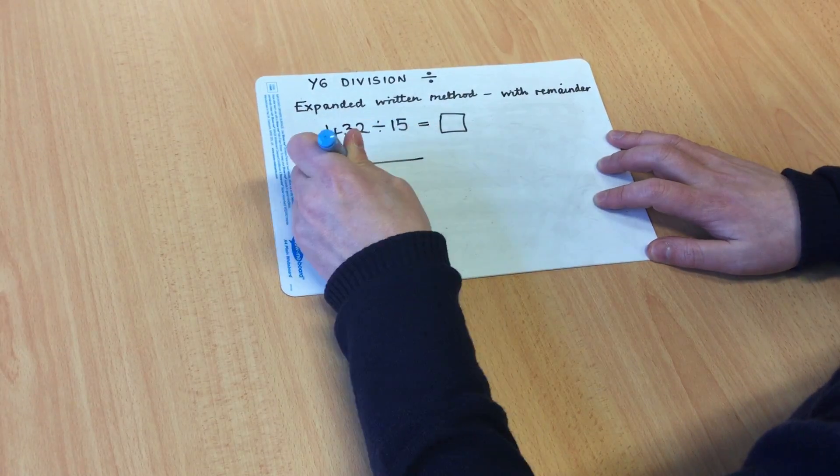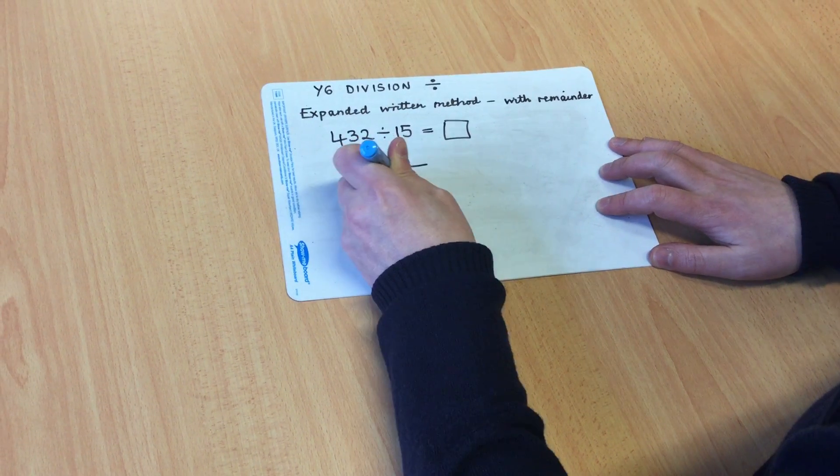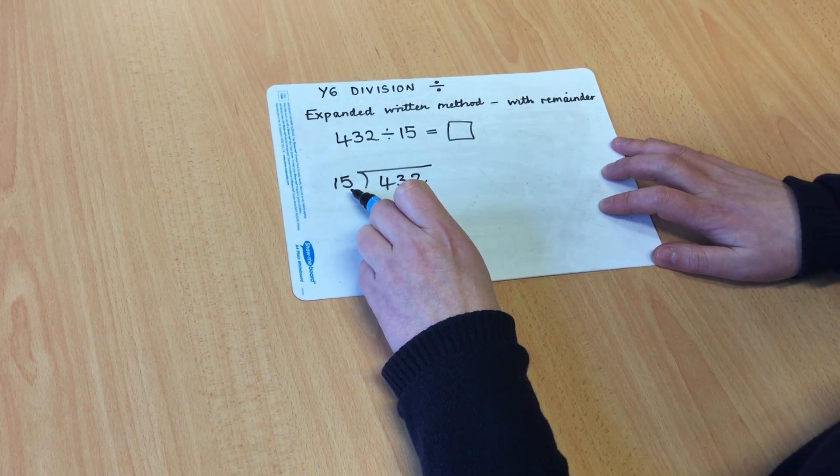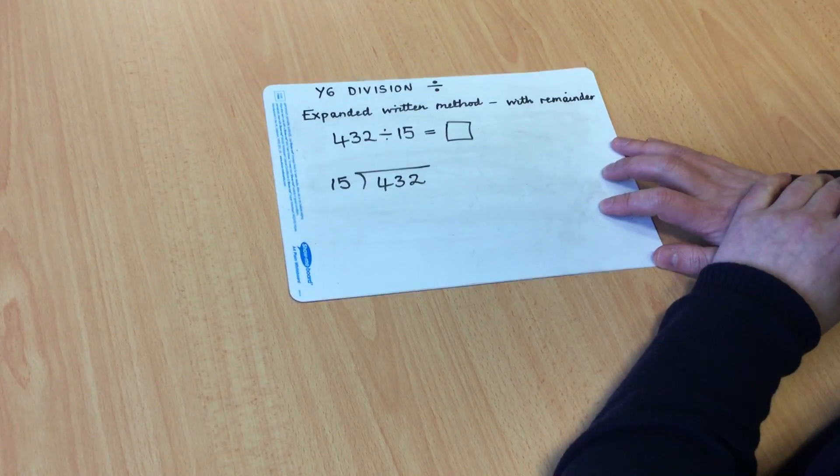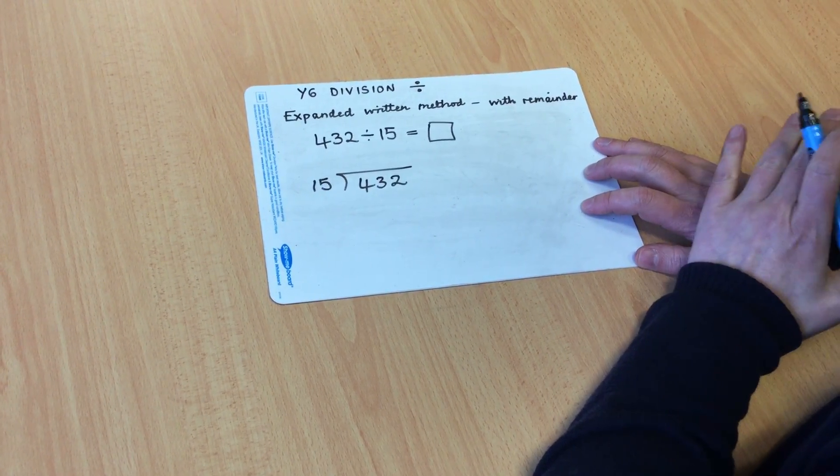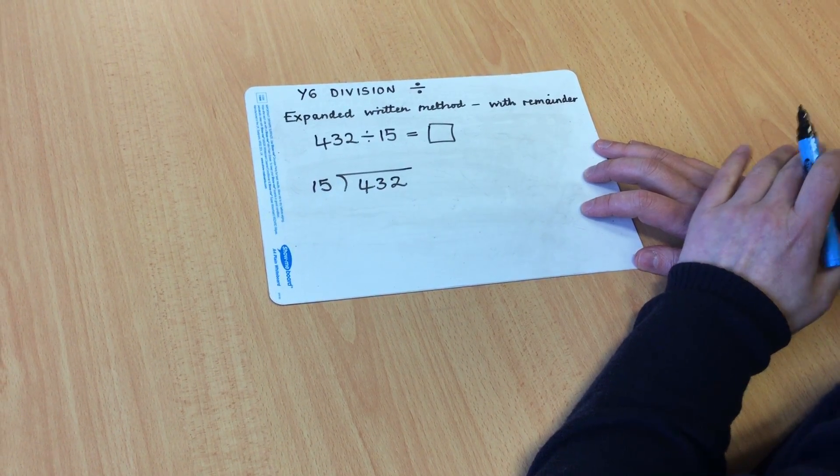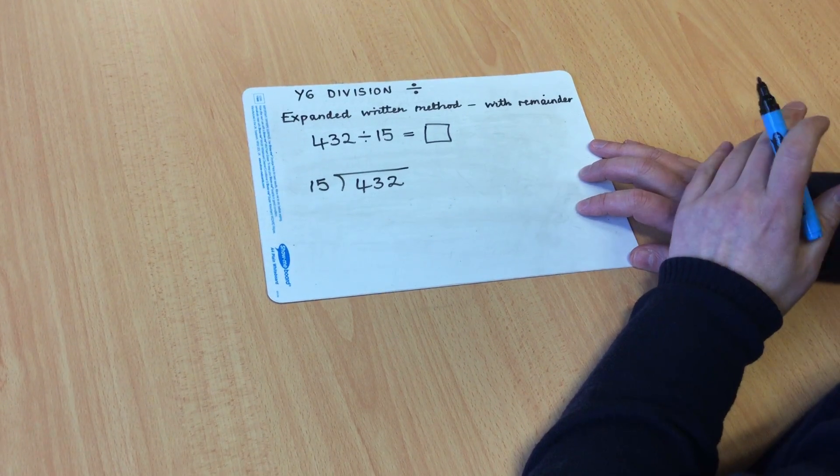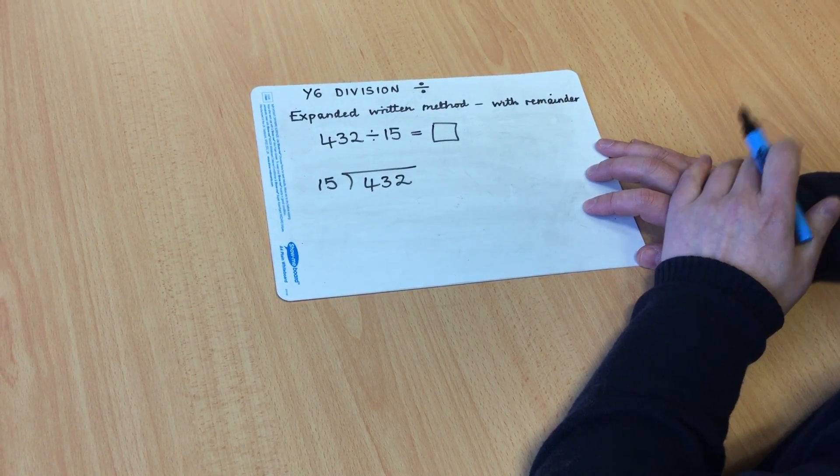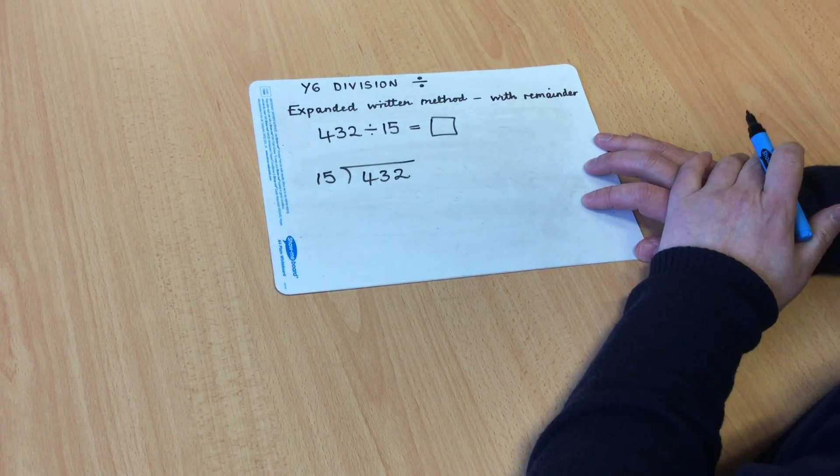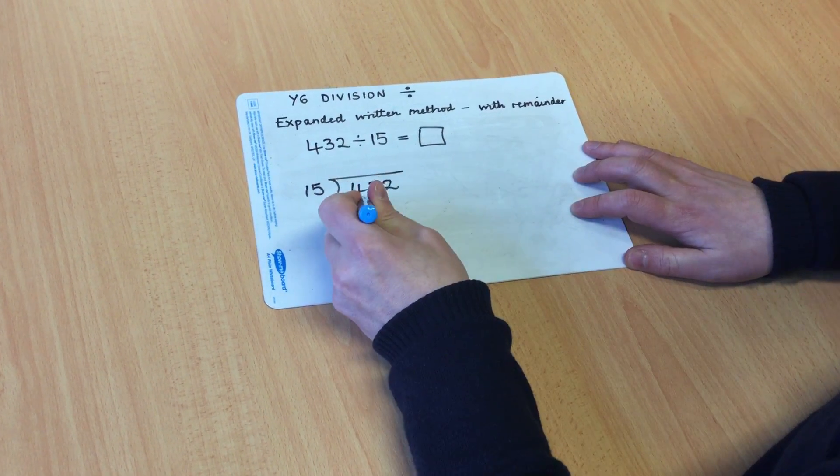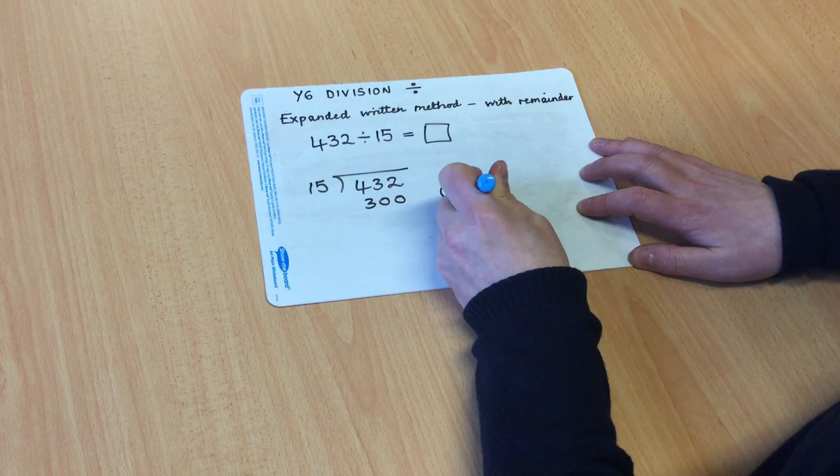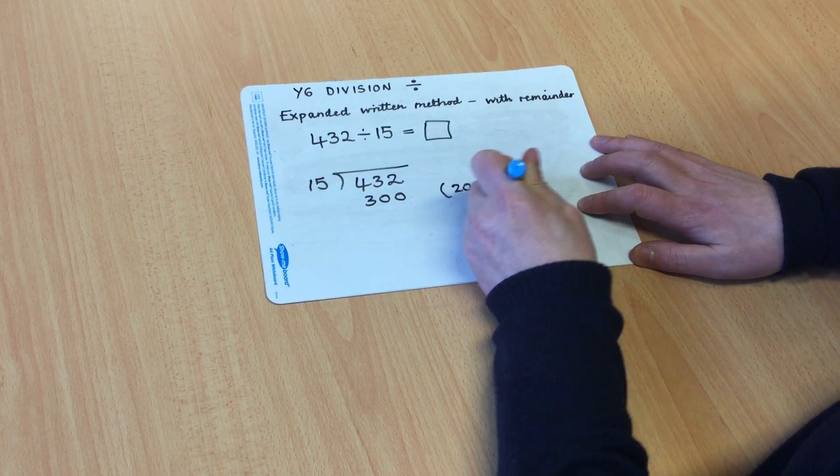So we set up the division as before, 432 divided by 15, with the divisor on the left. My first question is, how many 15s in 432? Well I know that 10 lots of 15 makes 150, therefore if I double that, 20 lots of 15, that would be 300. So I'm quite close to 432, so I'm going to record 300 underneath, and just as a reminder, put 20 multiplied by 15 on the side.